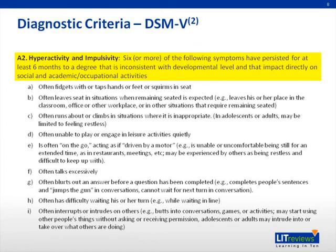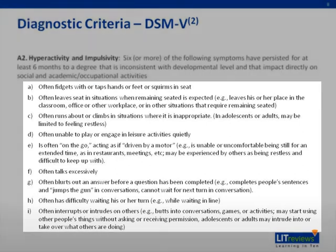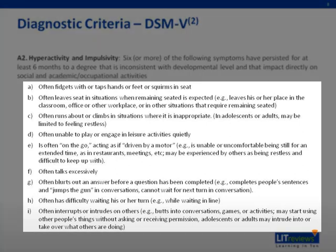A2 largely consists of hyperactivity and impulsivity. Six or more of the following symptoms must have been persistent for 6 months to a degree that is inconsistent with the developmental level and that impacts directly on social and academic or occupational activities. The following criteria are shown for hyperactivity and impulsivity.